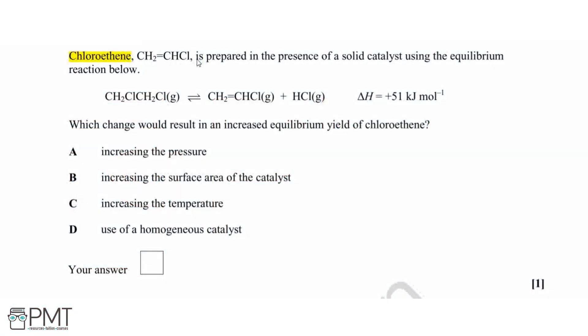Chloroethene, the structure here, is prepared in the presence of a solid catalyst using this equilibrium reaction, which we can see here below. The enthalpy change for the forward reaction is plus 51 kilojoules per mole. We need to identify which change will result in an increased equilibrium yield of chloroethene. So let's go through these options and see which one will give us the increased yield.